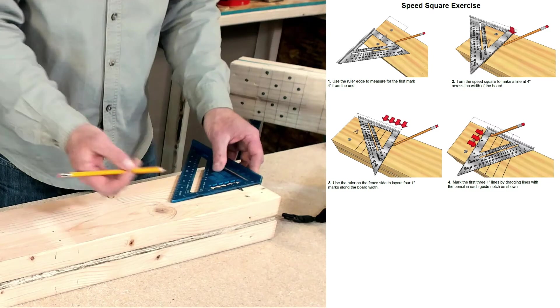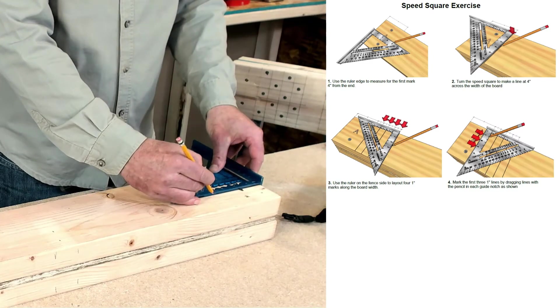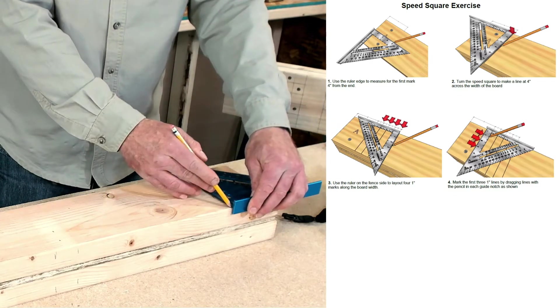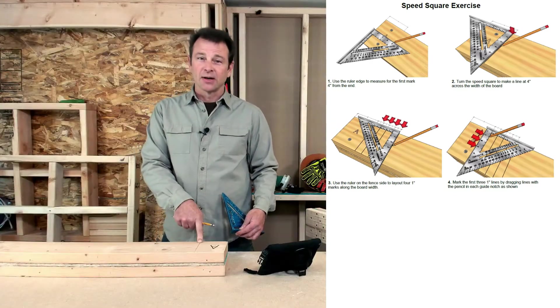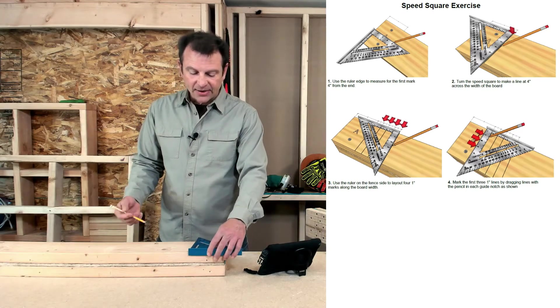So the first one is we need a four inch mark off the end. So we'll put our fence there. We'll mark that four inch mark and now we can draw a line there. So that's my start of my 20 square grid pattern right there.